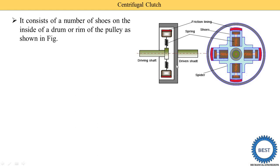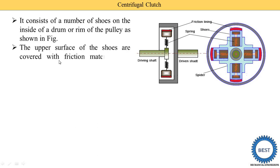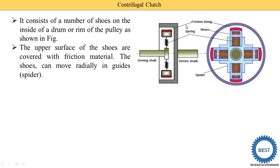Here you see the spring. In the front view, you can see the spider and the spring. These are the shoes. The upper surface of the shoe is covered with friction material — here the friction lining is shown. This pink-colored part is the friction material or friction lining.